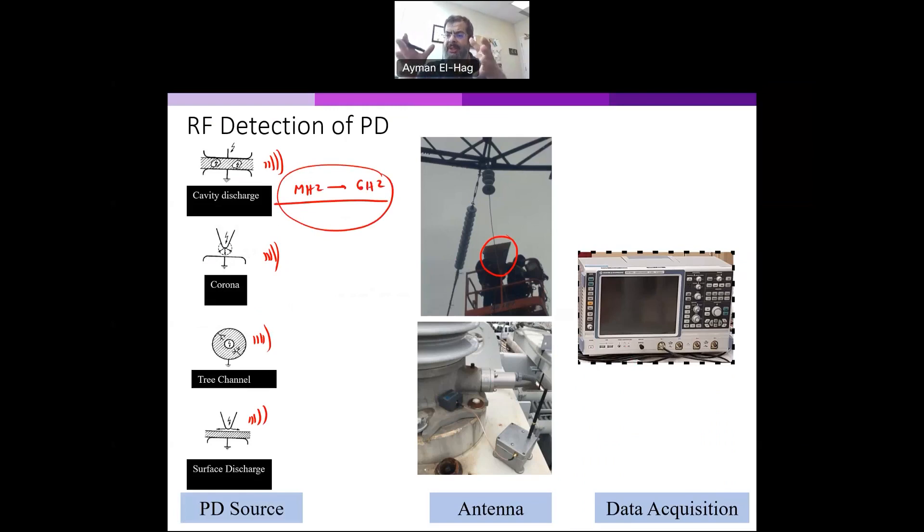For example, you cannot use an oscilloscope with a bandwidth of one megahertz or less than that, or a bit more than that. You will not detect most of the energy of the partial discharge. So that matching between the source of the partial discharge, the sensor which here is the antenna, and the data acquisition system is extremely important.